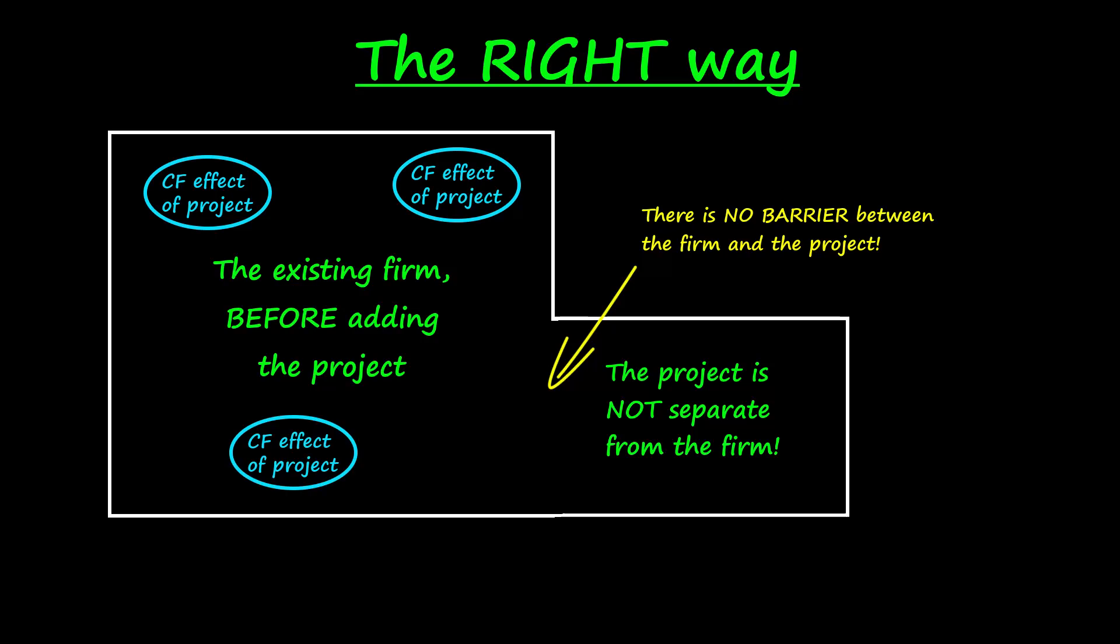Secondly, you need to think about a future for the firm that has two possible branches of reality. Only one of these can happen. Either the firm will accept the project and continue profitably into the future in a firm plus project state, or the project will be rejected and the future will be a firm without the project state of reality.